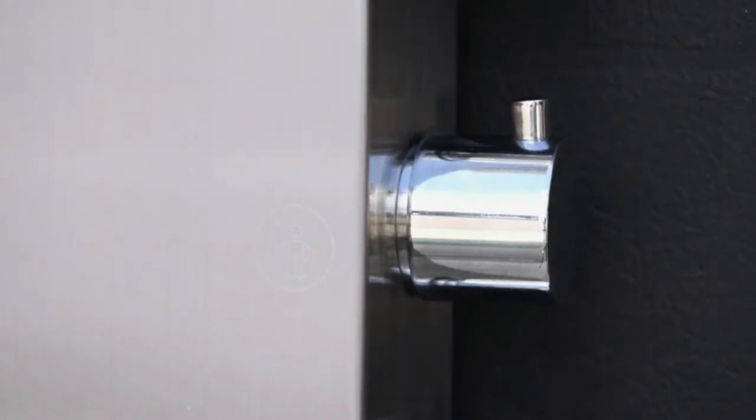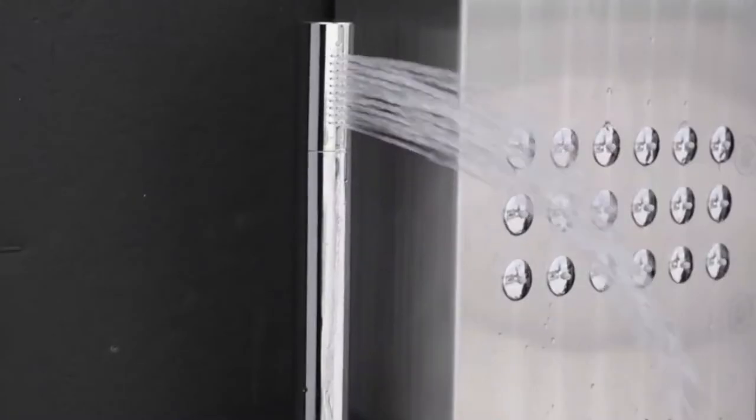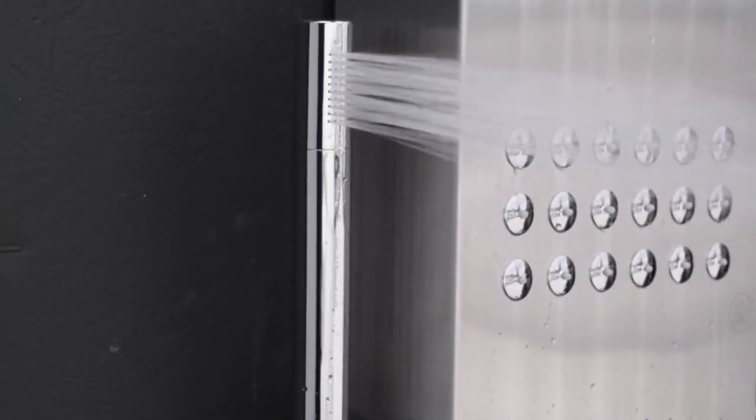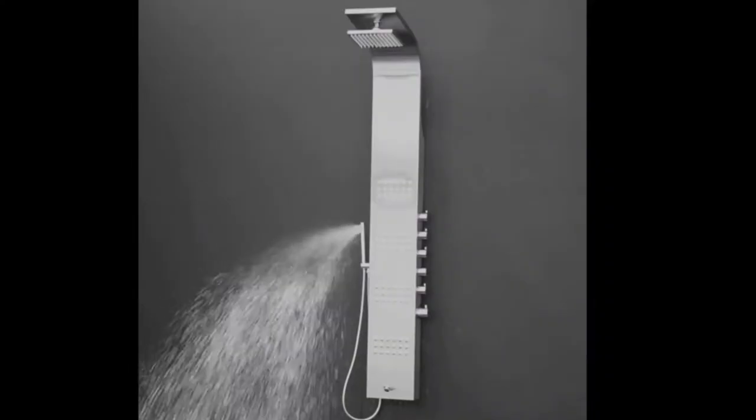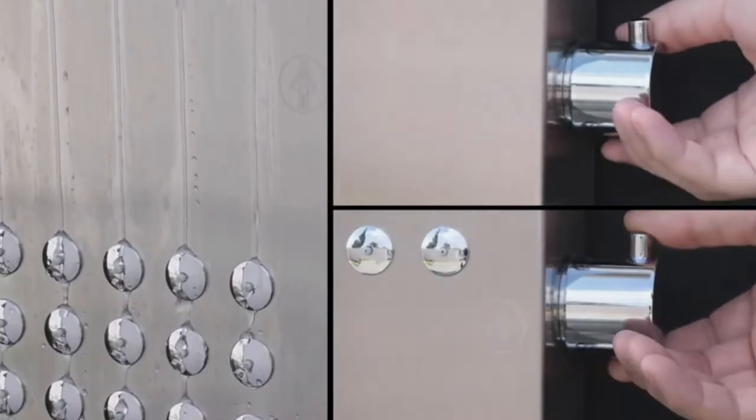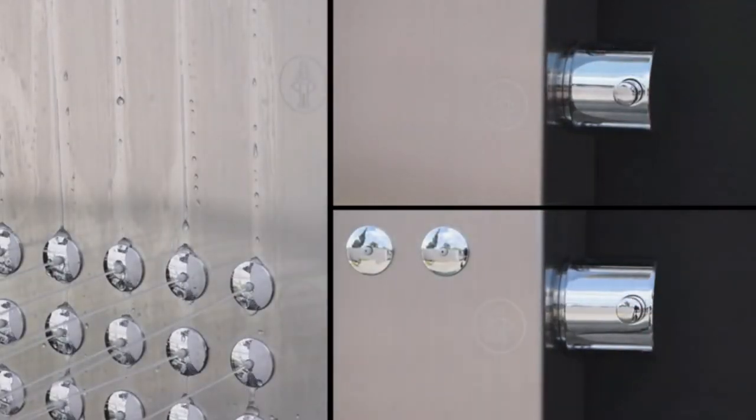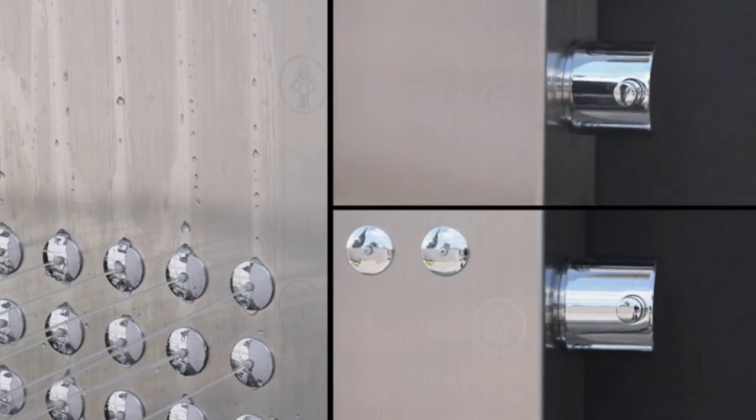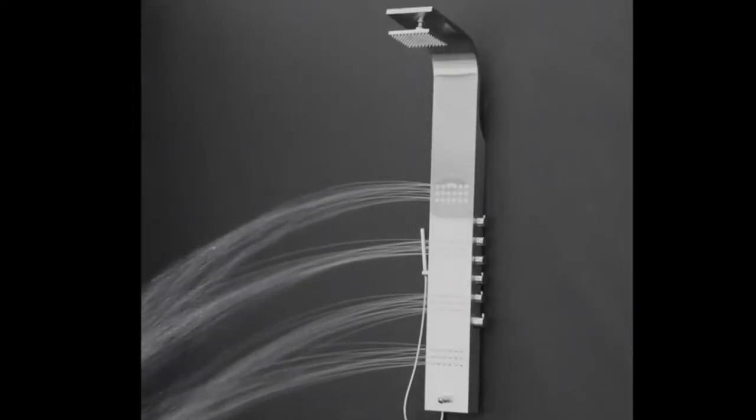Next is the selectable handheld shower wand. Sleek and stylish, this wand allows a directable flow of water where and when you need it. Next we have the body spray nozzles. With a dedicated knob for each pair of pods, they operate the 64 body nozzles designed to keep you nice and clean.